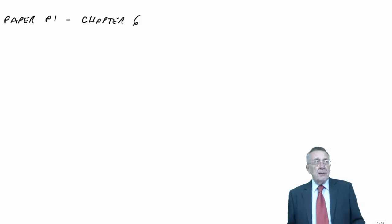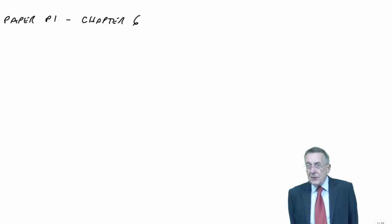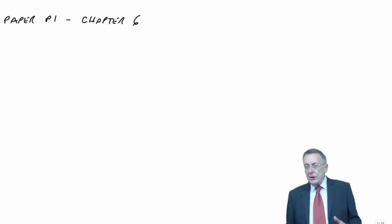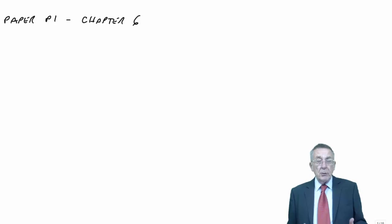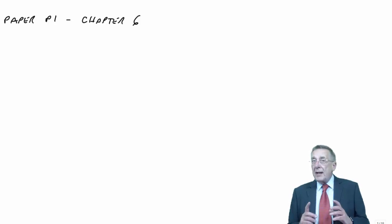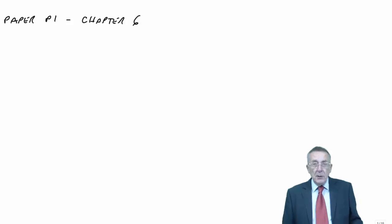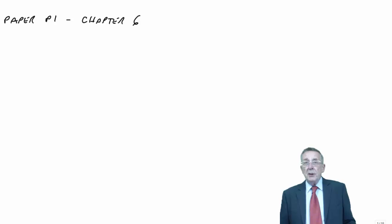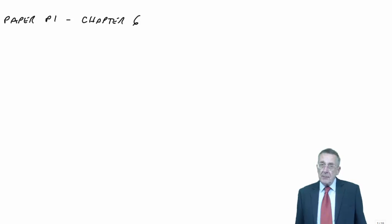To introduce it, just very quickly — you'll remember in an earlier chapter, chapter 3 I think, we talked about limited resources. We did conventional limited resource allocation and throughput accounting, but we only had one limited resource. Linear programming is a situation where you have more than one limited resource, which makes it a bit more complicated.